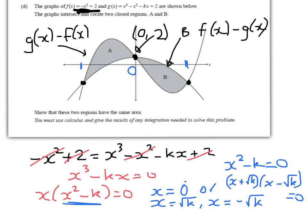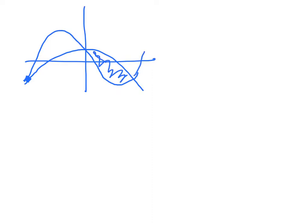Hopefully you've sketched what we're looking at. I'll try to do it again - sketch the parabola first, then add the cubic. This region here B, we want to show is equal to A.